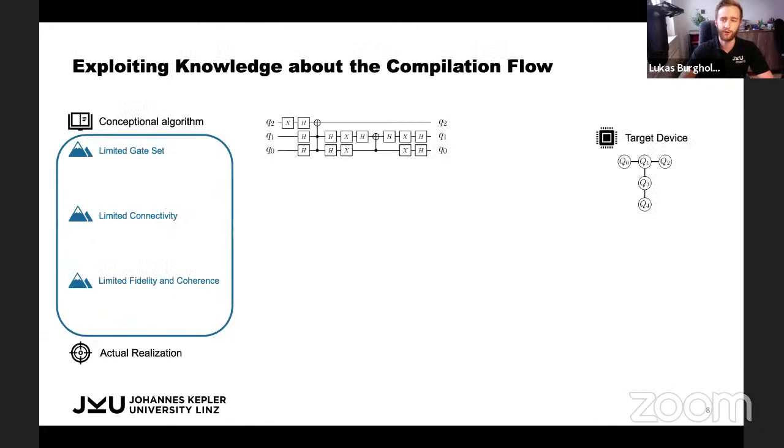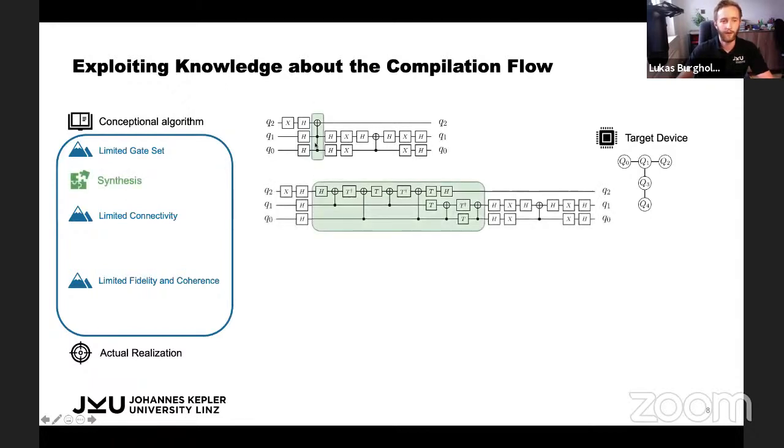This eventually allows us to efficiently verify compilation results. Let's take a look at what we know about the compilation flow. The compilation flow presents us with three obstacles: the limited gate set, the limited connectivity and the limited fidelity and coherence. There are basically three tasks which we applied to solve these problems. The first task was synthesis, where the Toffoli gate in the first circuit was decomposed into a sequence of supported operations of the target device. This readily tells us when we applied the Toffoli gate from the original circuit, then we should probably apply 15 gates from the second circuit. So it is rather easy to incorporate this synthesis step and it gives us an intuition on how to go on.